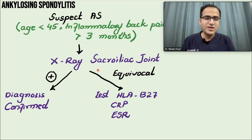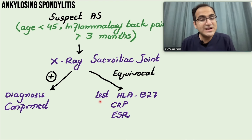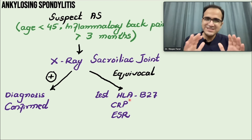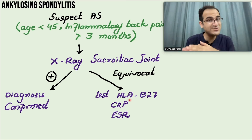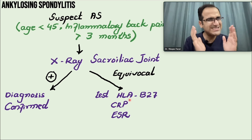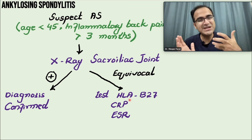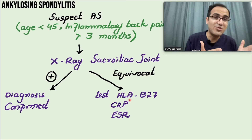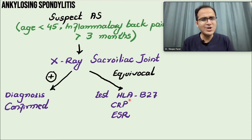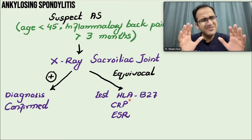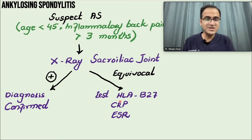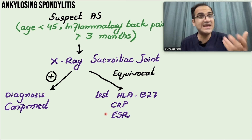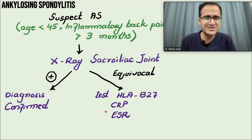If no changes are seen on X-ray of the sacroiliac joint, you can test for HLA-B27. It is not specific - it is also positive in other seronegative arthropathies, juvenile rheumatoid arthritis, and reactive arthritis - but it provides a useful hint. CRP and ESR are inflammatory markers that may be elevated and can also hint toward the diagnosis.